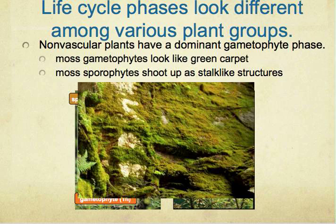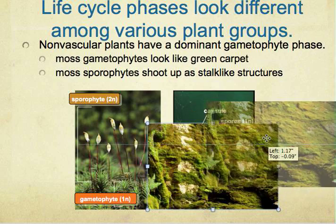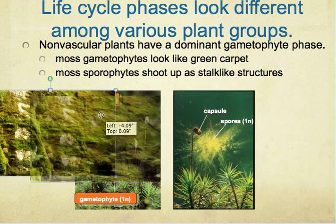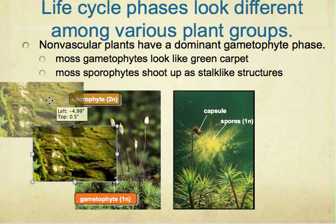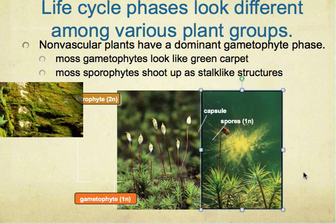Life cycle phase looks different among various plant groups. Nonvascular plants have a dominant gametophyte phase, and most gametophytes look like green carpet, as you can see right here.